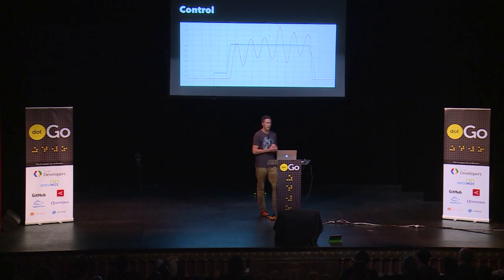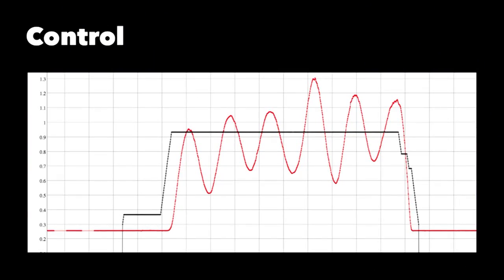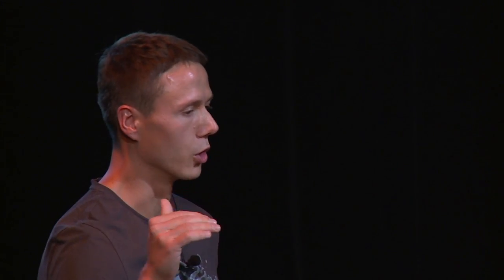Now that you know where you are, it's time to decide where you want to go. I've got an example here showing the altitude of the drone. The red line is the actual altitude that was measured, and the black line is the altitude that I, as a controller, actually told the drone to go to. Control theory is all about figuring out how to get from where you are to where you want to go.